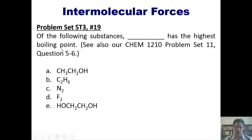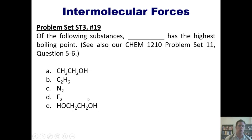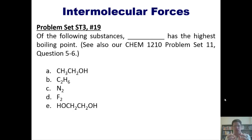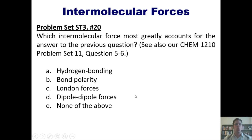Let's look at some practice questions. Of the following substances, which one has the highest boiling point? Notice that molecules A and E have hydrogen bonding, while B, C, and D do not. Since all these molecules are roughly similar in molecular weight, the answer comes down to A versus E — whichever has more hydrogen bonding will stick more intensely to other molecules of itself and will require more heat to convert from liquid to gas. The final question then asks: which intermolecular force most greatly accounts for that answer?